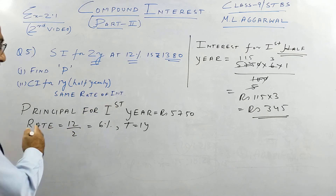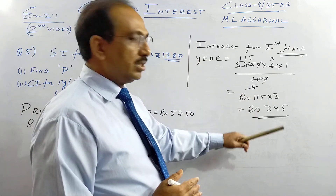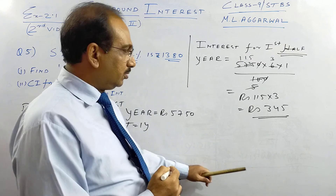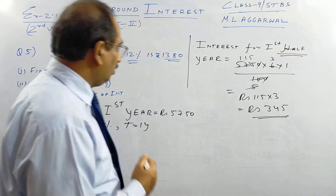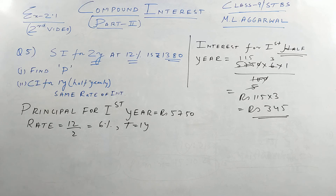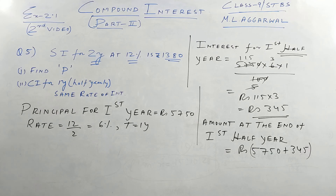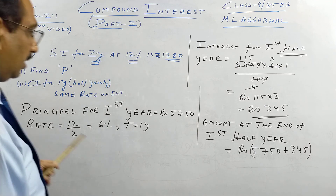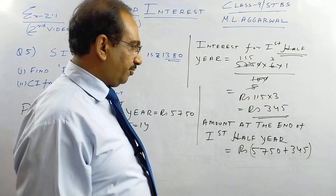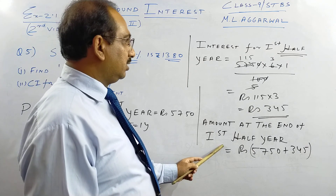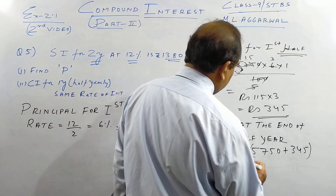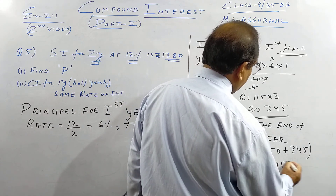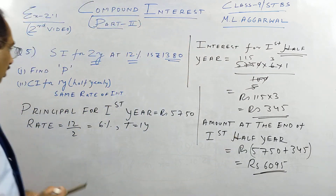Please copy this. Amount at the end of the first half year is the principal plus interest: 5750 + 345 = rupees 6095. This amount at the end of the first half year becomes the principal for the second half year.